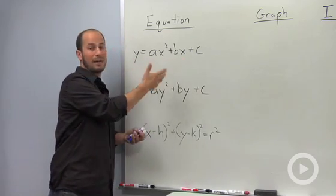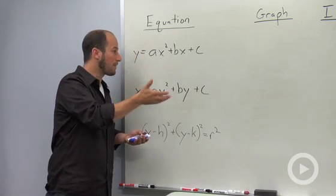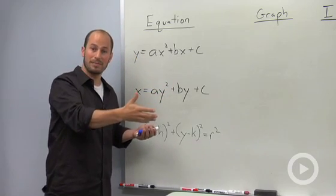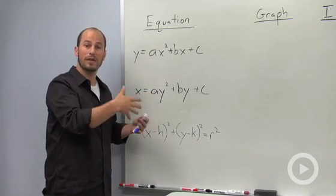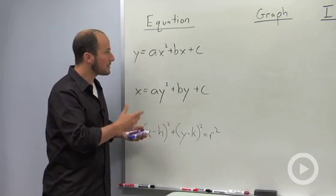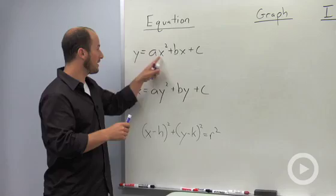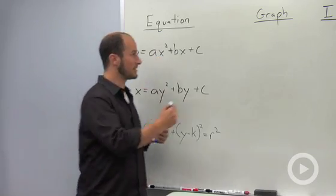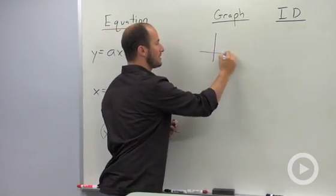Like this first equation here, this is standard form for a vertical parabola. You also sometimes see it in vertex form, but hopefully you'll be able to switch back and forth between those two fairly easily. So this first one, our graph is a vertical parabola like I just mentioned.